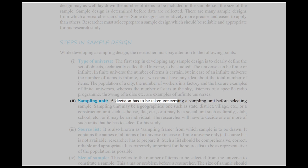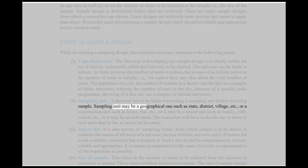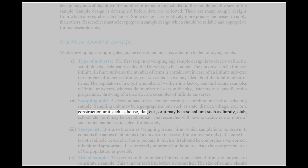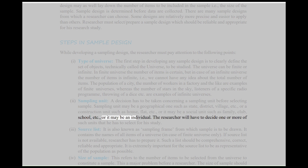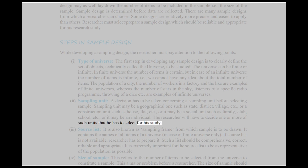Second, Sampling Unit: A decision has to be taken concerning a sampling unit before selecting a sample. A sampling unit may be a geographical one such as state, district, village, etc., or a construction unit such as house, flat, etc., or it may be a social unit such as family, club, school, etc., or it may be an individual. The researcher will have to decide one or more of such units that he has to select for his study.